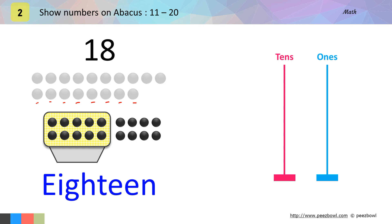Now we need to show number 18 on the abacus. We will count the number of boxes. Here we have only 1 box. That means we need to place 1 circle on the tens line. Here I place 1 circle on the tens line. And after this, I will draw 8 circles on the ones line.